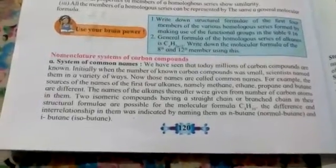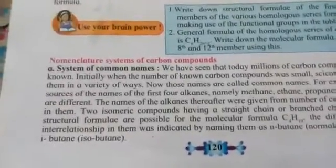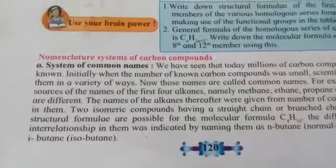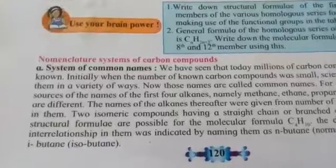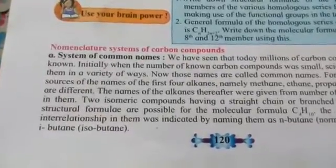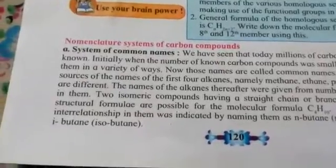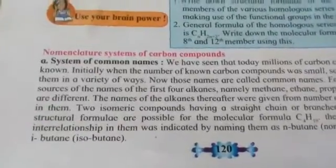Let's see systems of common names. Today millions of carbon compounds are known. Initially, when the number of known carbon compounds was small, scientists named them in a variety of ways — those names are called common names. There are two types of names: the chemical name and the common name. For example, NaCl — the common name is common salt but the chemical name is sodium chloride. Baking soda is a common name for NaHCO3, while the chemical name is sodium bicarbonate. Washing soda is a common name for Na2CO3, while the chemical name is sodium carbonate.